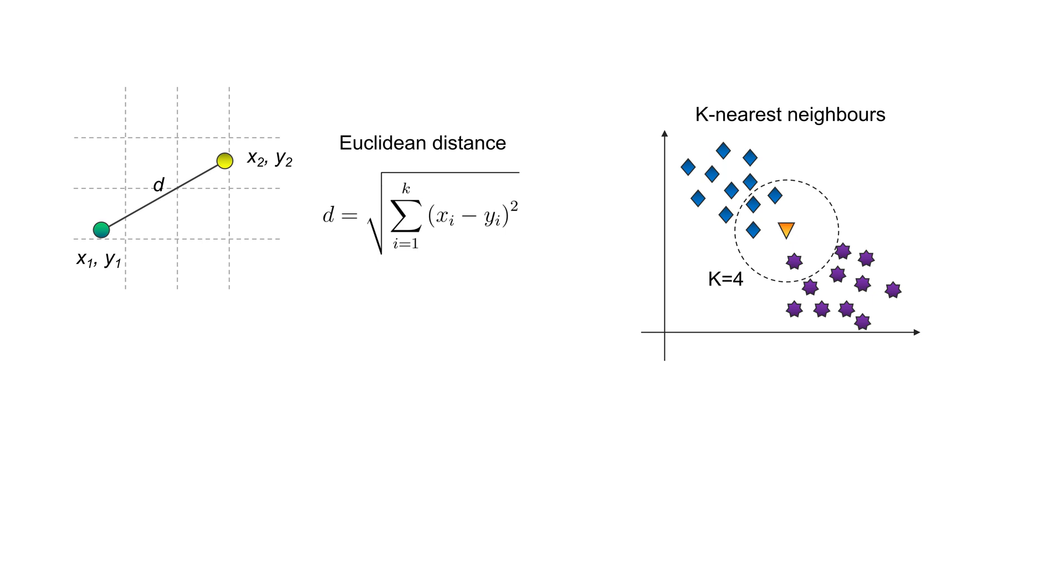Therefore, we choose K examples from the dataset which are nearest to the orange triangle. In the figure, K is equal to 4, and 4 nearest neighbors are 3 diamonds and 1 star. Therefore, the new example belongs to diamonds, because they are in the majority.